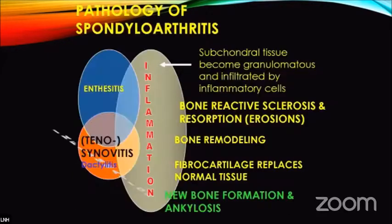Ankylosing spondylitis involves a combination of inflammatory and pathological processes in the spine. Subchondral tissue becomes granulomatous and is infiltrated by inflammatory cells. This is followed by bone reactive sclerosis, resorption, and erosions. Then bone remodeling occurs — fibrocartilage replaces normal tissue, new bone formation takes place, and ultimately ankylosis is seen.